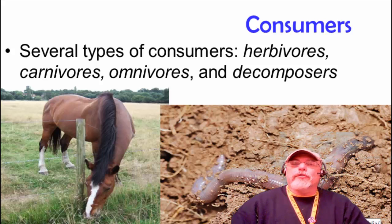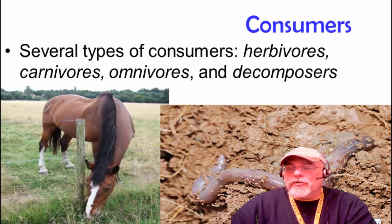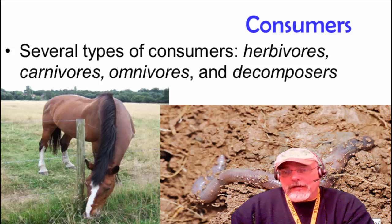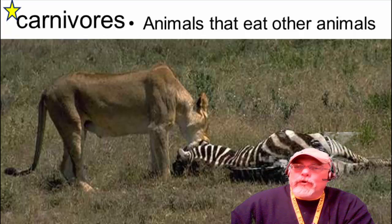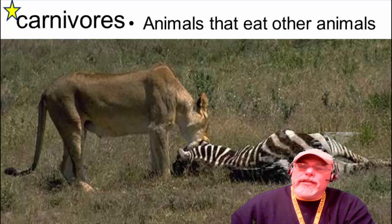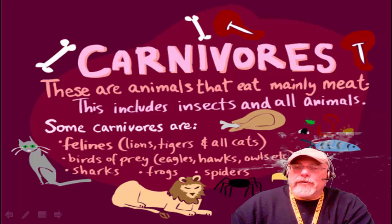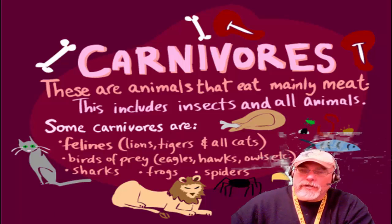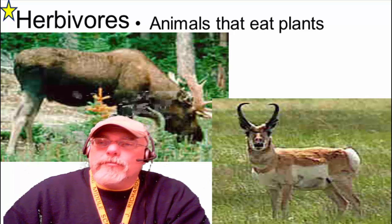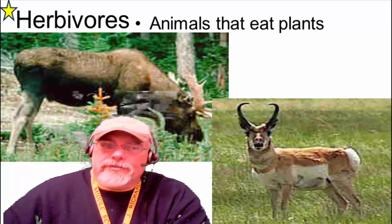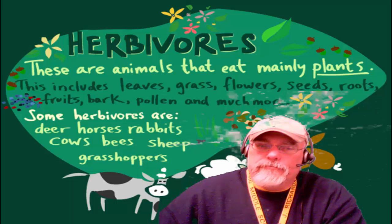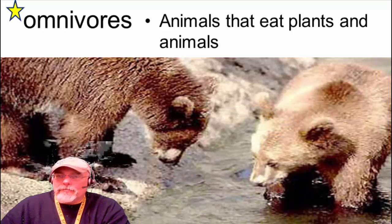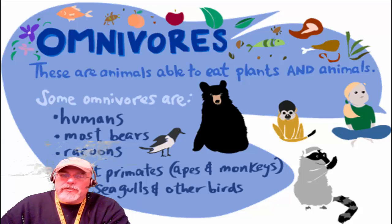There are several different types of consumers: herbivores, carnivores, omnivores, decomposers, and some other subcategories as well. Carnivores are animals that eat other animals — owls are an example of carnivores. Herbivores are animals that eat plants. Omnivores are animals that eat both plants and animals.